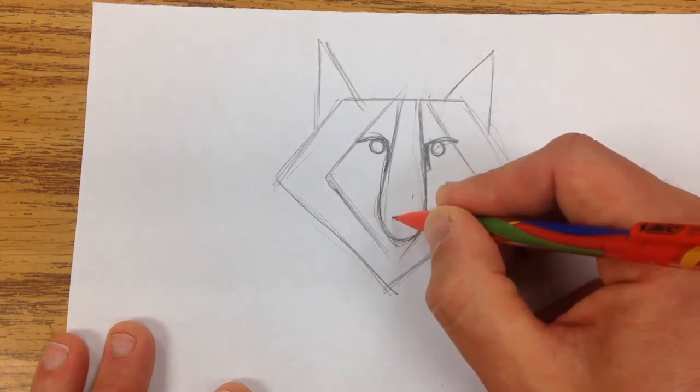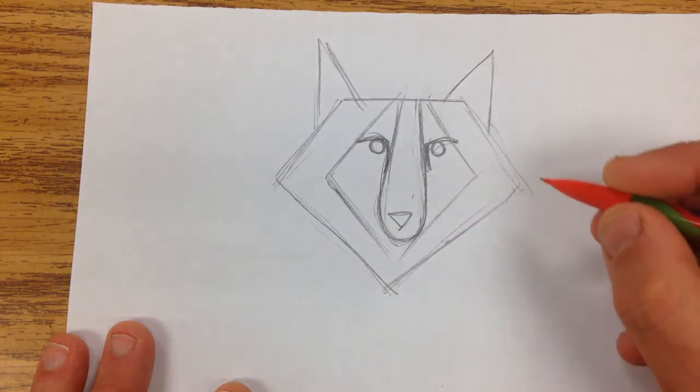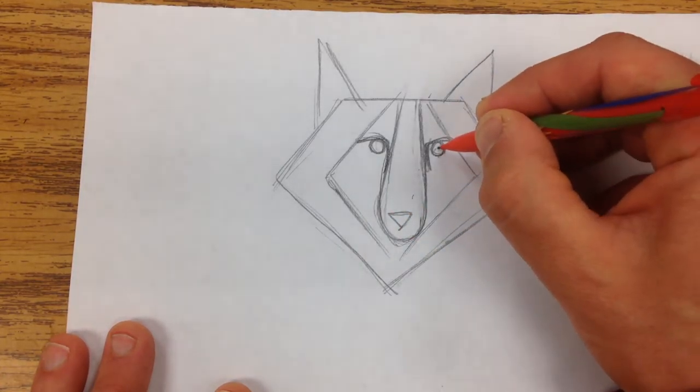We're going to add the nose, that's just a triangle, and then we can add the pupils in.